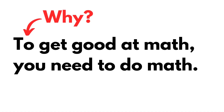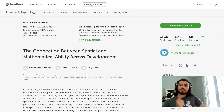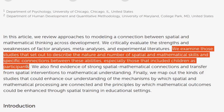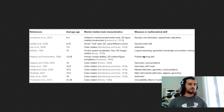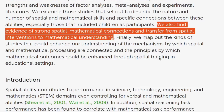Assuming my subjective experience and Grant's is correct — that you need to do math to get good at math — why is math like that? Why does it stand out compared to other disciplines like biology, which you can master by just learning the facts? This meta-review paper in the psychology field called 'The Connection Between Spatial and Mathematical Ability Across Development' shines some light on the matter. There seems to be a deep link between spatial ability and mathematical ability across a whole range of age groups. The authors concluded: 'We also find evidence of strong spatial-mathematical connection and transfer from spatial intervention to mathematical understanding.'